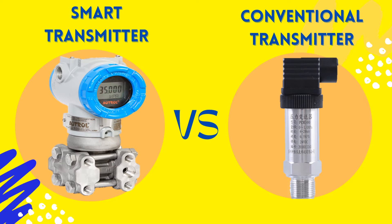Transmitters play a vital role in instrumentation and control systems. There are two types of transmitters available: smart transmitters and conventional transmitters. In this video, we will compare both types of transmitters.